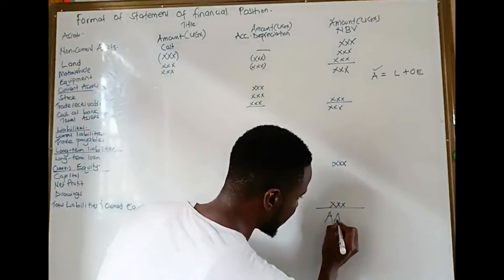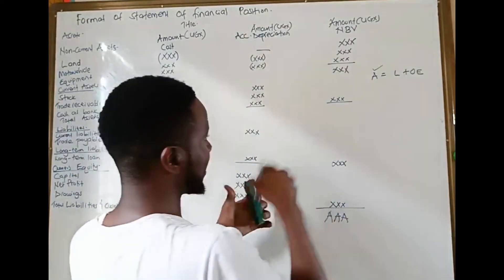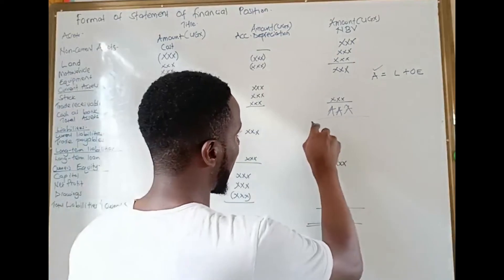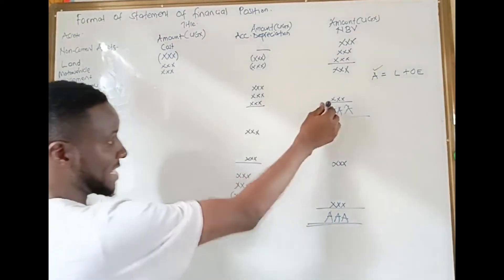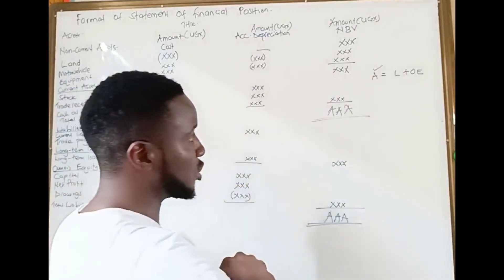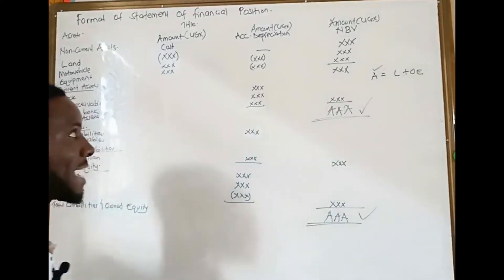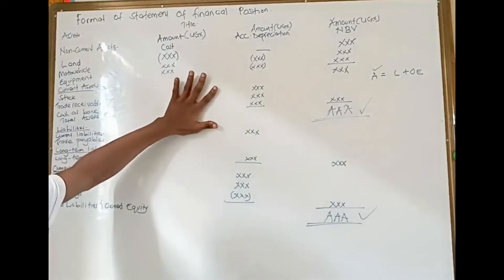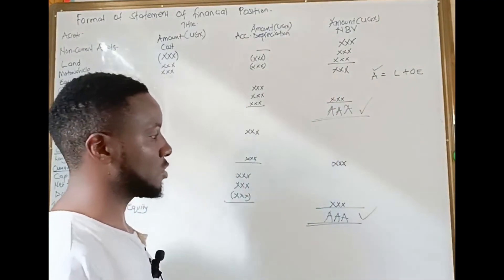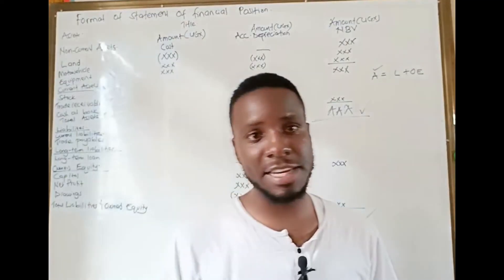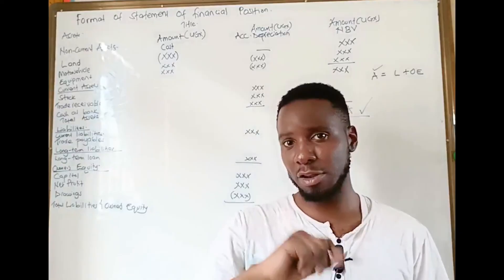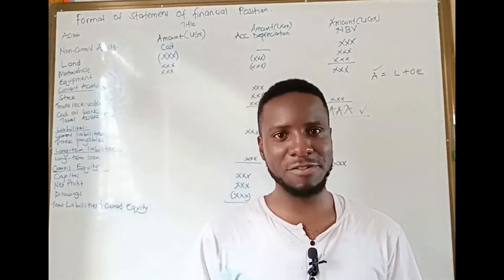The total liabilities and owner's equity should be the same value as the total assets. At the end of the day we have a statement of financial position that is in balance — both sides have the same values, confirming that our statement of financial position has duly balanced. Ladies and gentlemen, this is how a statement of financial position looks like. We shall solve a full question going from the income statement straight through to the statement of financial position. Thank you for watching — this is Kevin Davis Accounting. Share with your friends, subscribe, and hit the bell button to receive notifications. Bye for now!